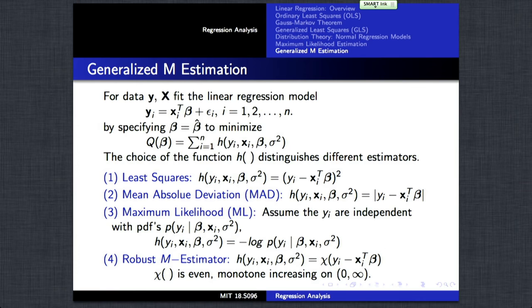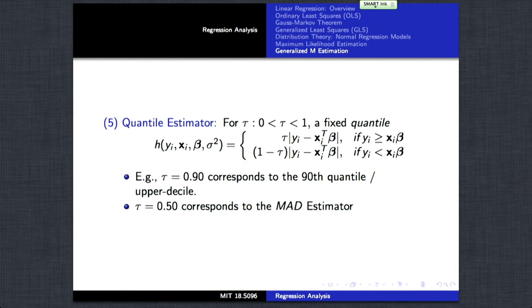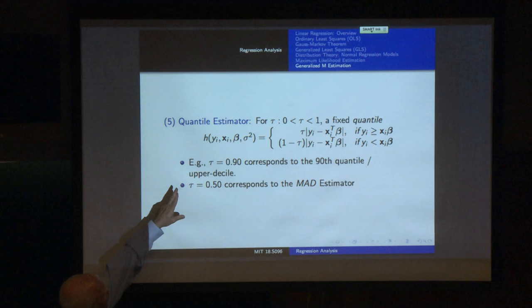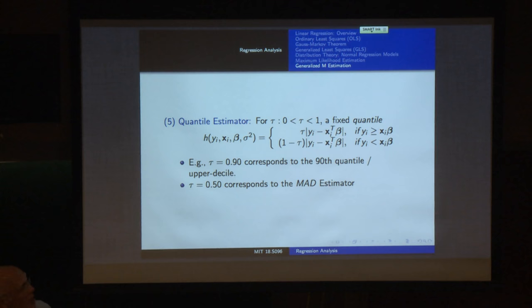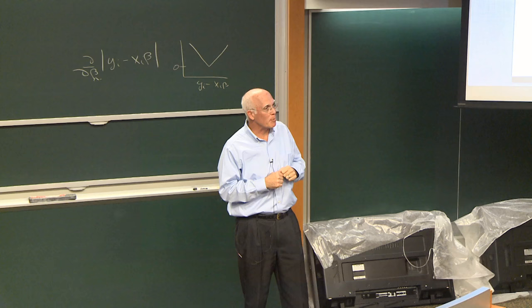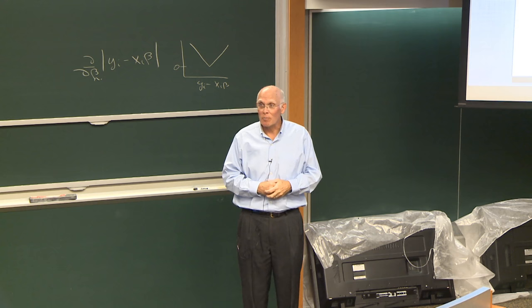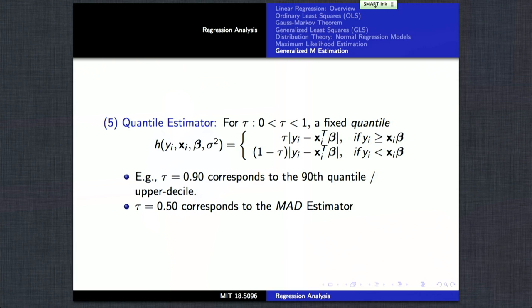There are also quantile estimators, which extend the mean absolute deviation criterion. If the H-function applies one multiple when the residual is positive and a complementary multiple when it is negative, then by varying tau you get quantile estimators that minimize an estimate of the tau quantile. This general class of M-estimators encompasses most estimators we will encounter in fitting models.